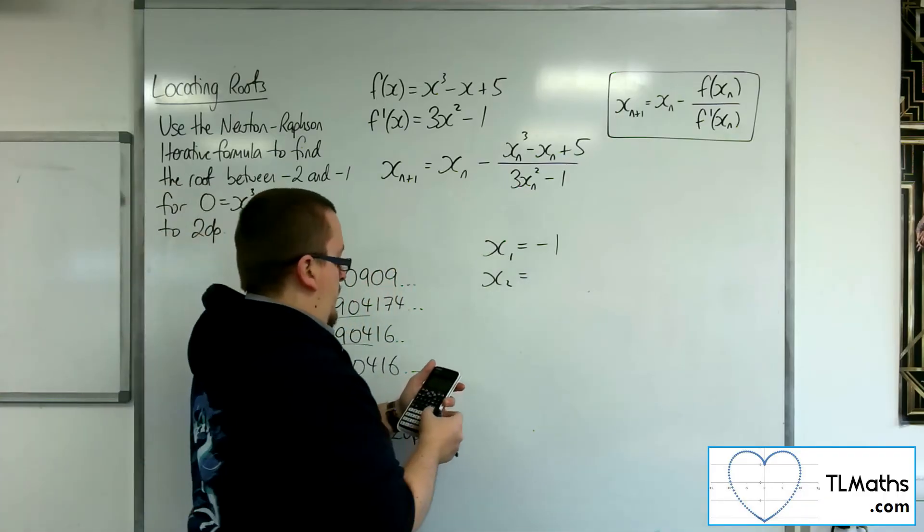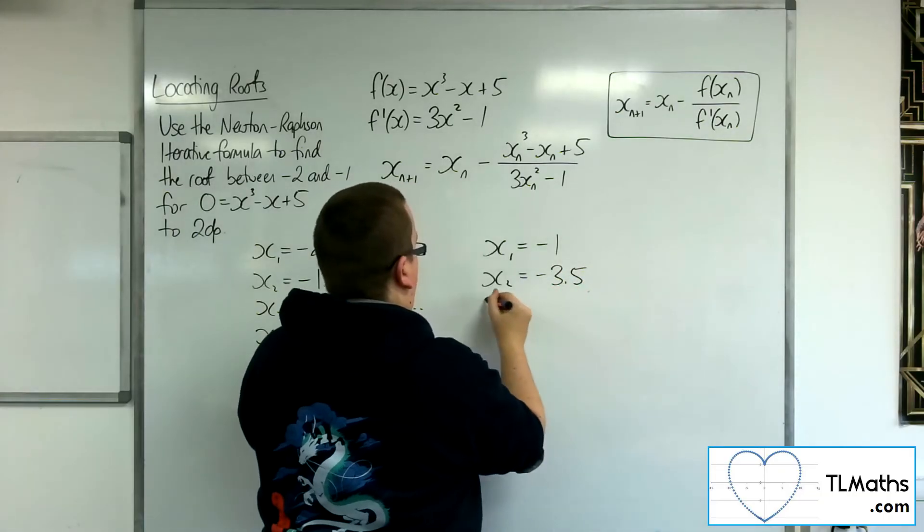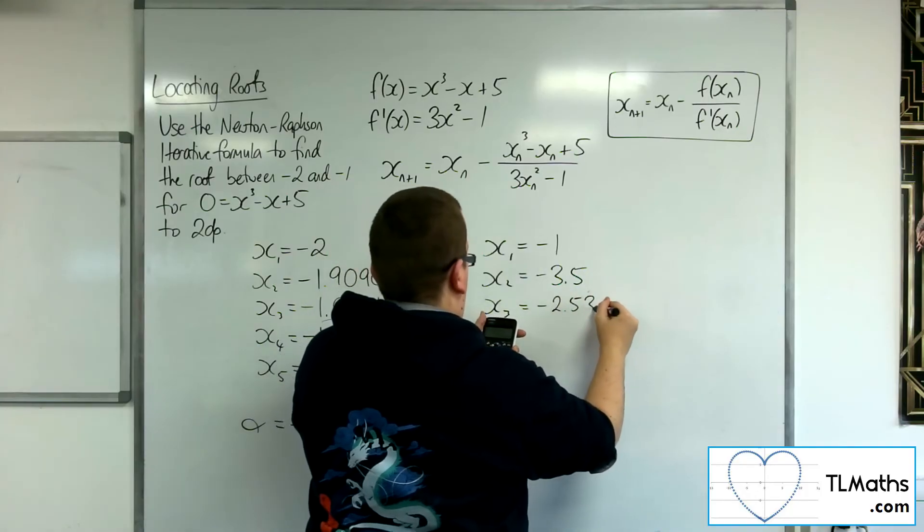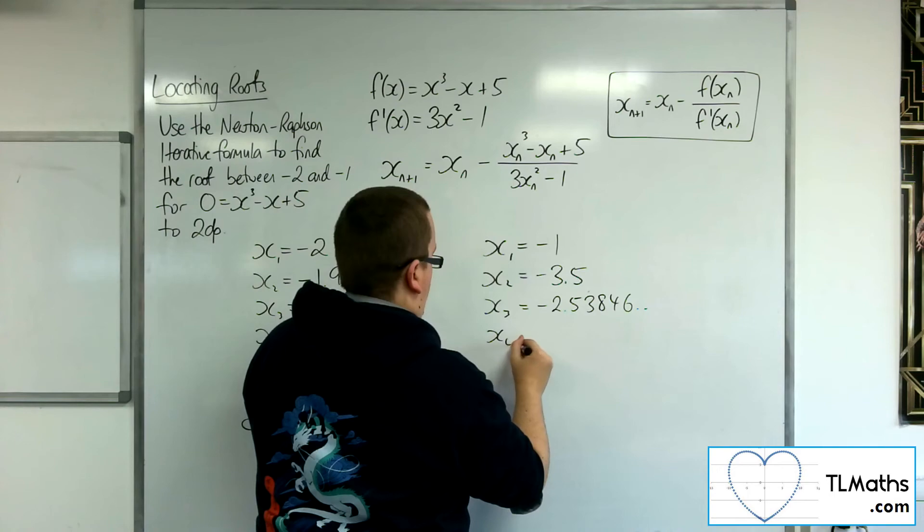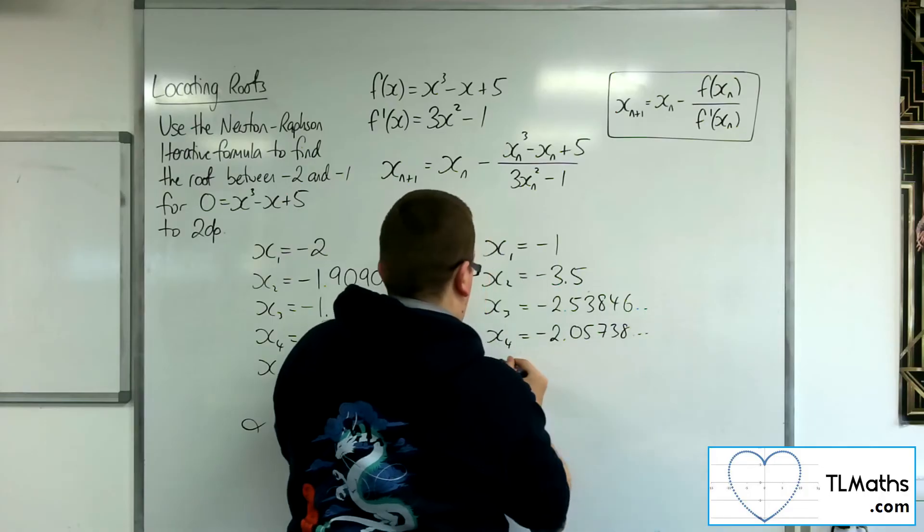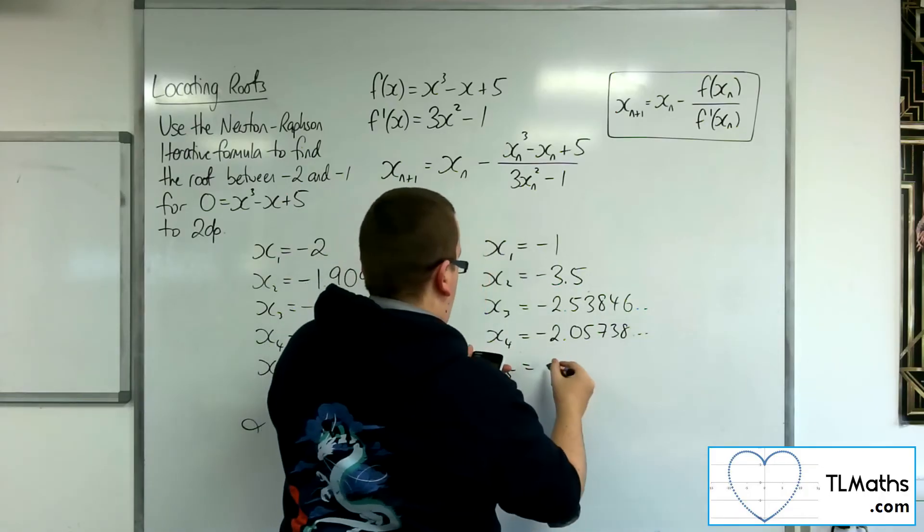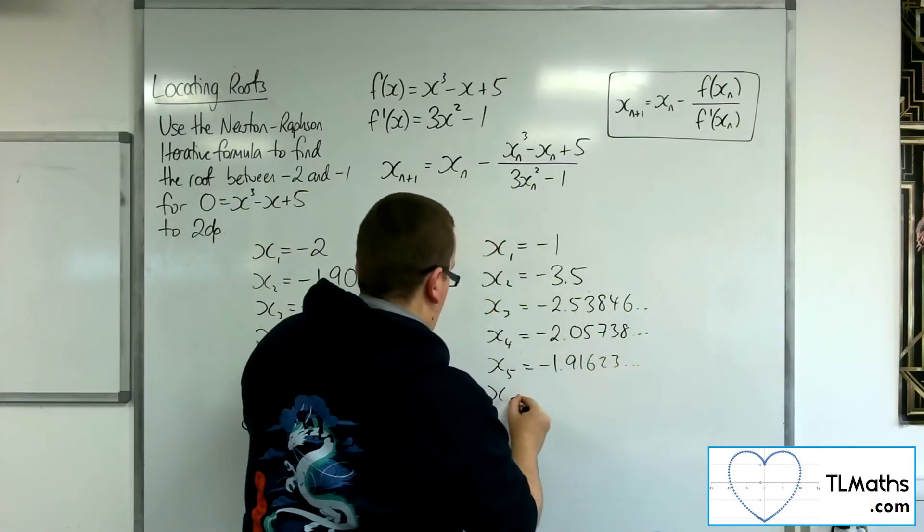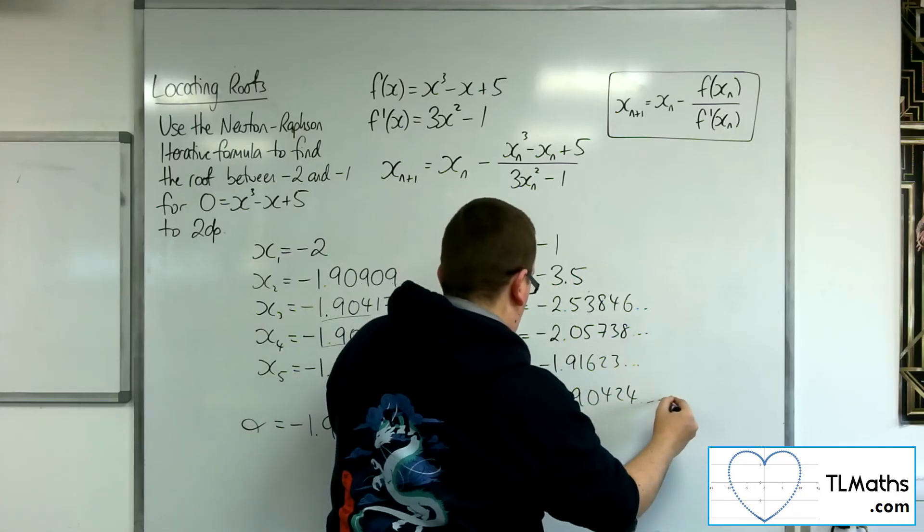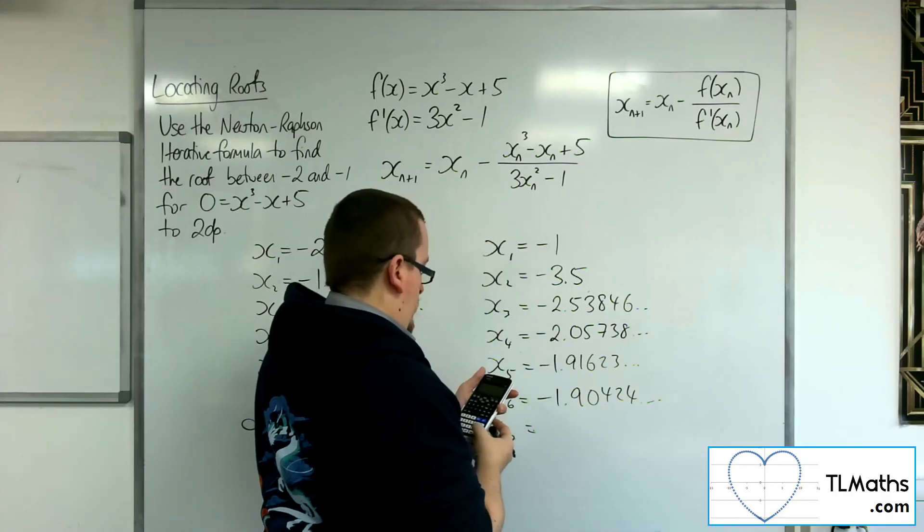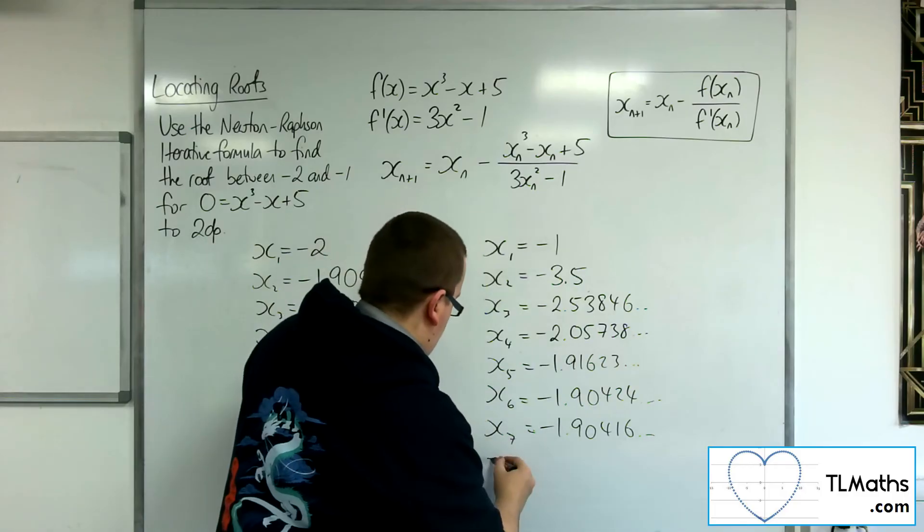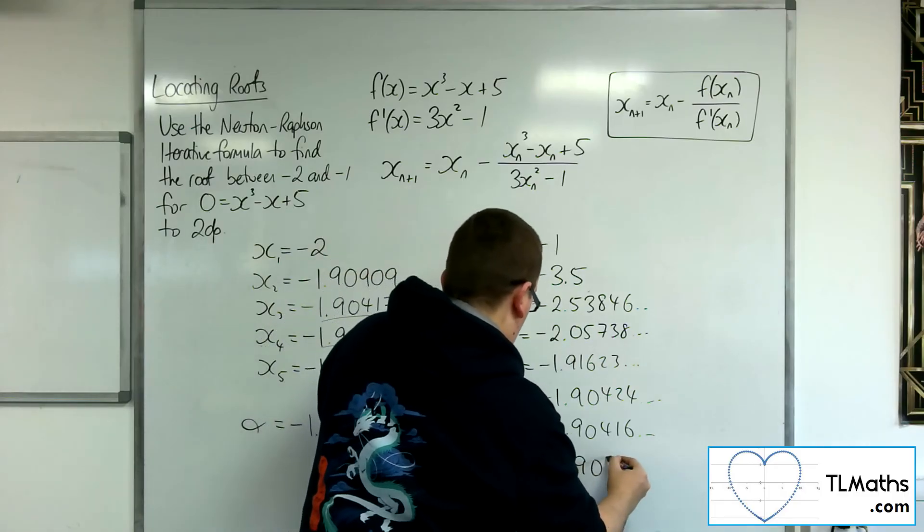So x₂ is -3.5, x₃ is -2.53846, x₄ is -2.05738, x₅ is -1.91623, x₆ is -1.90424, x₇ is -1.90416, x₈ is -1.90416.